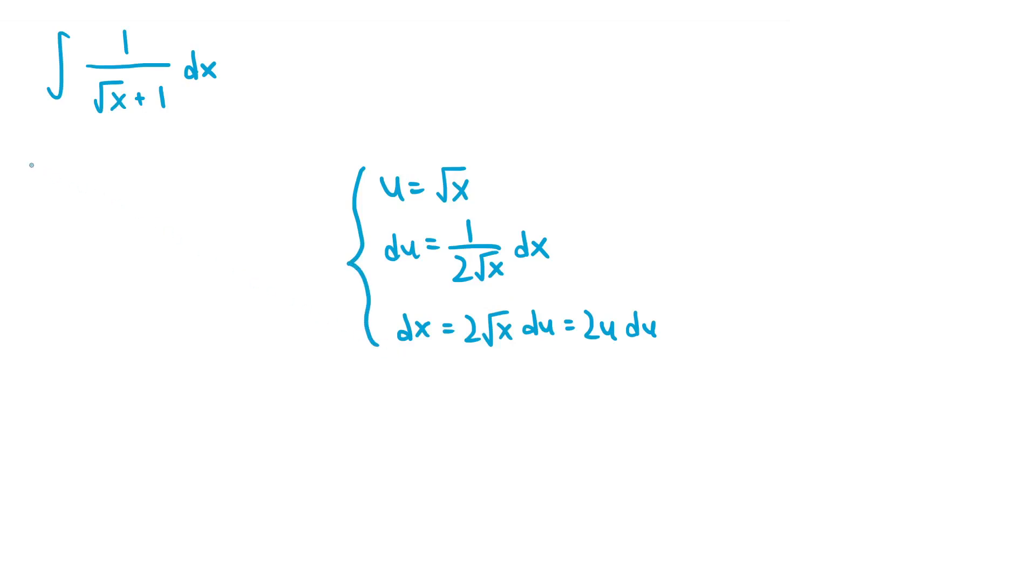So this integral becomes the integral of 1 over u plus 1 times 2u du, since the square root of x is replaced by u and dx is replaced by 2u du. If we simplify this expression, this becomes the integral of 2u over u plus 1 du. So the integrand is now a rational function in terms of u since we no longer have any non-integer exponents.